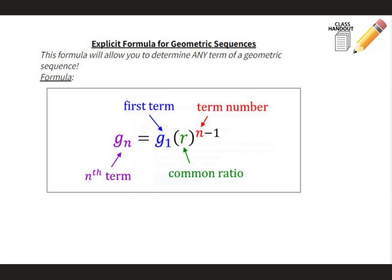Now that we can identify a geometric sequence, we should be able to write an explicit formula for a geometric sequence. The explicit formula is: Gn equals G1 — the first term — times the common ratio to the n minus 1 power. This n minus 1 is an exponent. It looks similar to the arithmetic sequence formula, but instead of using the common difference, we use the common ratio, and n minus 1 is an exponent rather than just in parentheses.